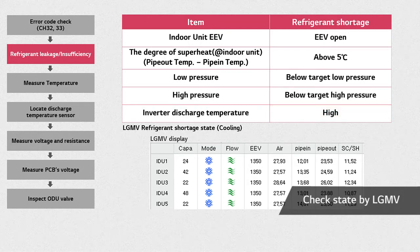Low refrigerant volume may cause excessive discharge temperature. There are two possible causes for lack of refrigerant: maybe the right amount was not charged into the system from the very beginning, or there is a leakage in the piping. Check the brazing and flare connections of the air conditioner.